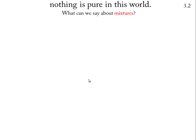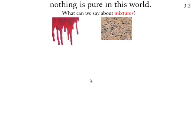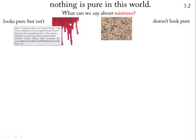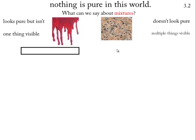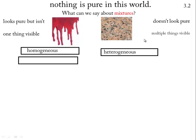In this world, nothing is really pure. So what can we say about a mixture like blood or granite? Well, there are two types really. There's the type that looks pure — they look like one thing — but they're not. And there's the other type, the ones that are clearly speckled; you can see more than one thing. If you can only see one thing, we call that a homogeneous mixture — it's evenly mixed. If you can see more than one thing, we call it a heterogeneous mixture.